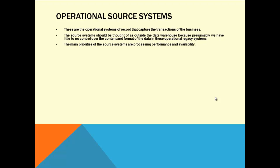Processing and availability — which means I want it to be available at midnight or day, 24 by 7. How many of us are unhappy when it says 'system under maintenance, sorry for inconvenience'? Though it is hard for business to avoid that, they do it only at nights around 1 o'clock during non-peak time — they will bring the system down, put some patches, increase server capability. The main priorities of source systems are processing, performance, and availability.